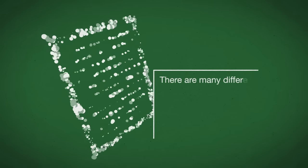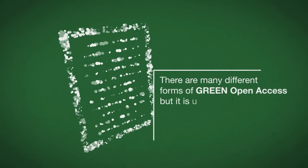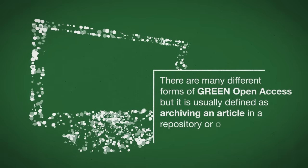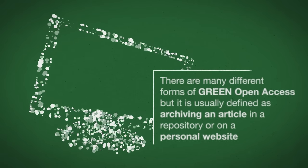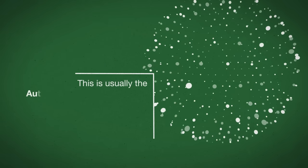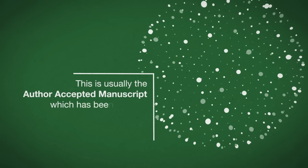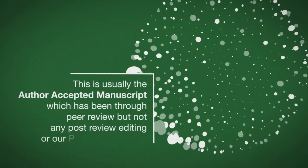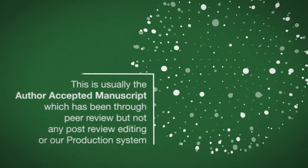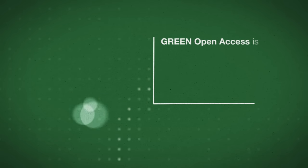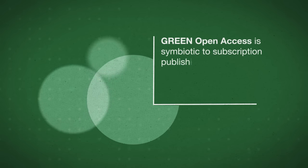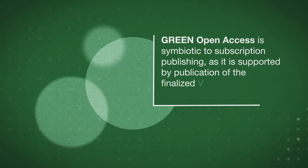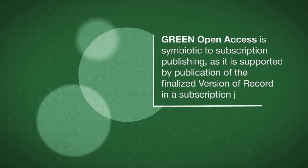There are many different forms of green open access, but it's usually defined as archiving an article in a repository or on a personal website. This is usually the author-accepted version which has been through peer review but hasn't been through any post-review editing or our production system. Green open access is symbiotic to subscription publishing as it's supported by publication of the finalized version of record in a subscription journal.